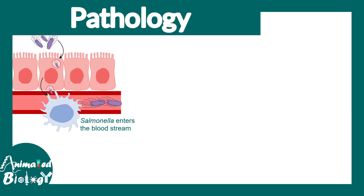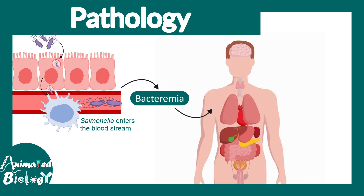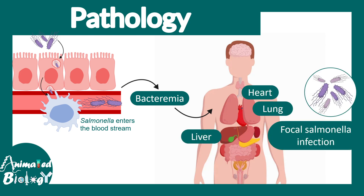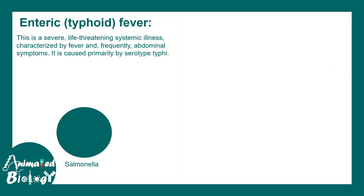Some Salmonella can enter the bloodstream, ultimately leading to bacteremia. These bacteria can then travel to different organs such as the lungs, heart, and liver, forming focal Salmonella infections.